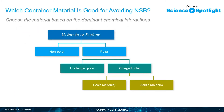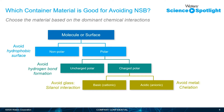One thing you can do to avoid nonspecific binding is to make a thoughtful, informed choice of sample container based on the dominant chemical interactions you want to avoid. If you have a nonpolar analyte, you want to avoid a container with a hydrophobic surface. If you have a polar analyte, consider whether it's uncharged — in which case avoid hydrogen bond formation — or charged. If it's basic, avoid glass due to silanol interactions. If it's acidic, you may need to avoid metal, which can cause chelation interactions.